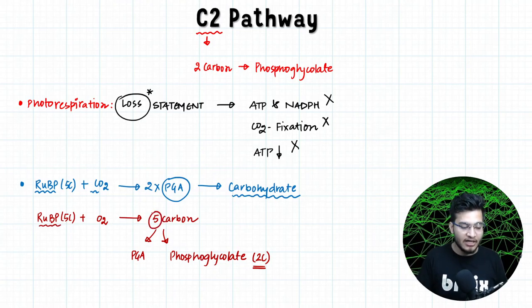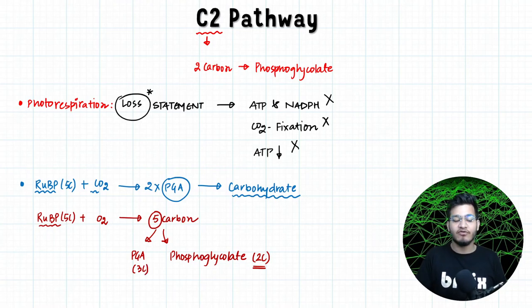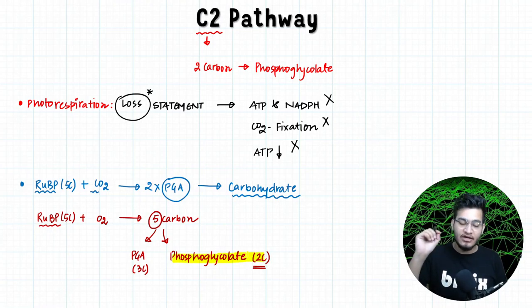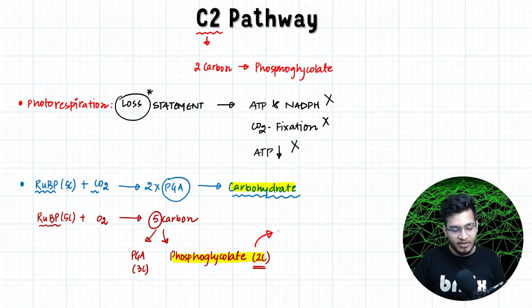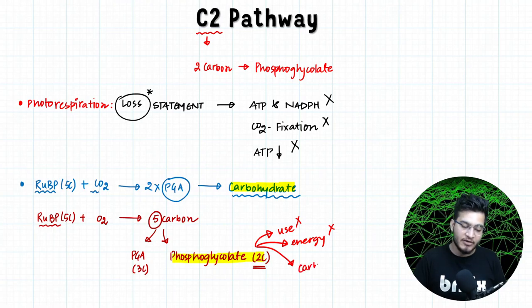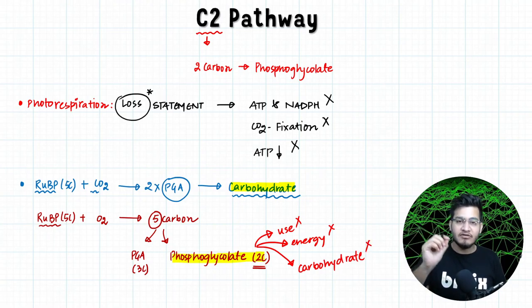That is why photorespiration is called the C2 pathway. When RuBP reacts with oxygen, the 5-carbon molecule gets bifurcated into PGA of 3 carbons and phosphoglycolate of 2 carbons. This phosphoglycolate molecule consumes your energy, and that's why photorespiration is a loss statement — because carbohydrates are not formed here. Phosphoglycolate cannot be properly used in any other metabolic pathway; you cannot metabolize it well, you cannot extract energy from it, and you cannot form carbohydrates from it. It is essentially a useless molecule.